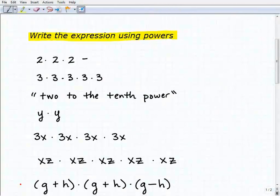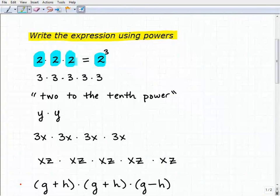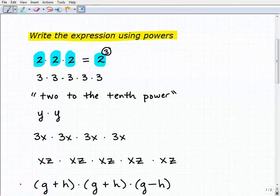Alright, so here we have our first problem, which is 2 times 2 times 2. What's another way of writing that? We can write that as 2 cubed. Remember, the 2 is called the base, and it represents what we're multiplying. And the 3, right up here, that's called the exponent. That indicates how many times we're multiplying.